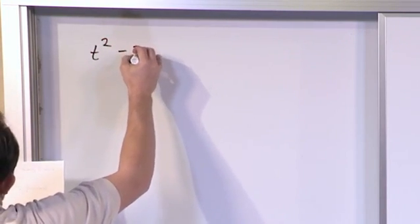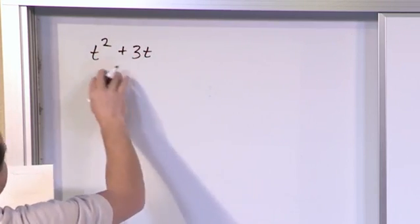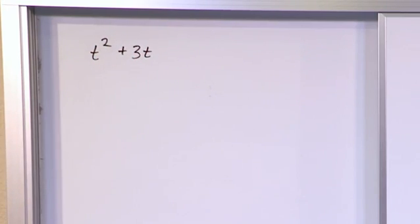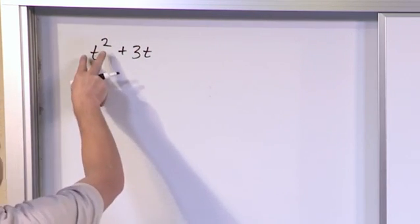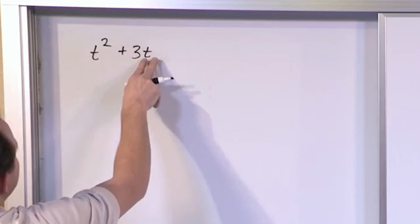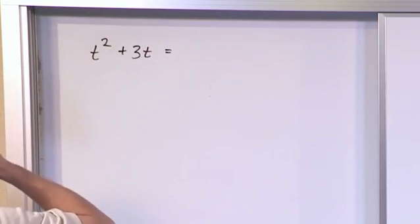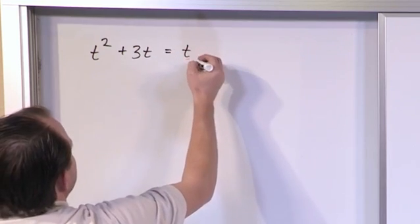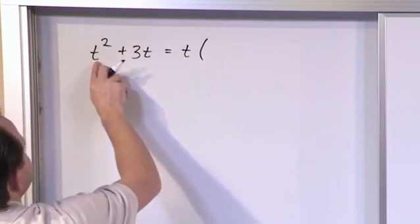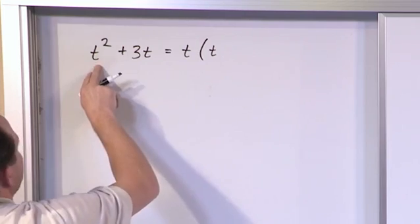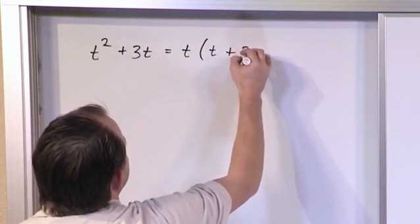t squared plus 3t. This is sort of a review. In general, factoring is you want to go in and take something out that's common. So here we have a t squared and here we have a t. So we know that one t is common to each of these. So from the last section we learned we can pull that t out and then on the inside we need to have another t so these make t squared and then we need to have a plus 3 here.